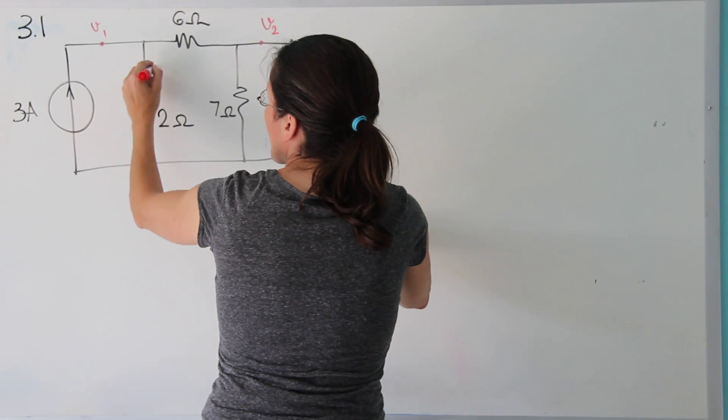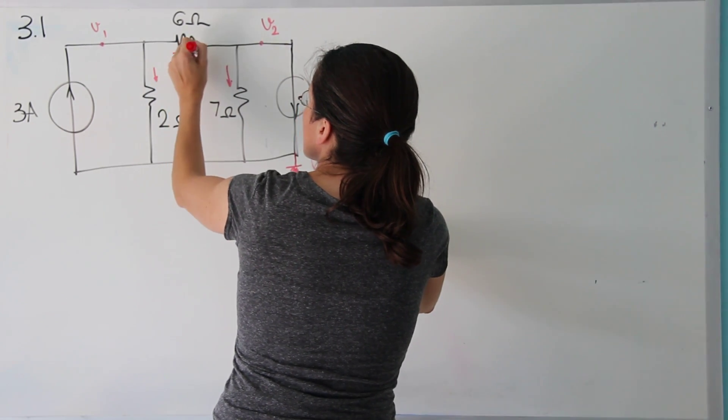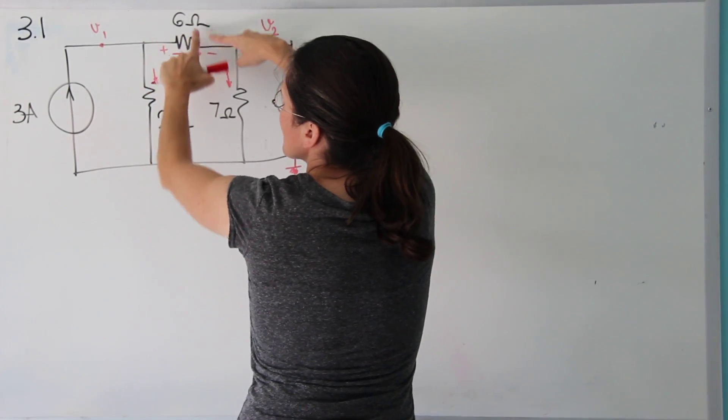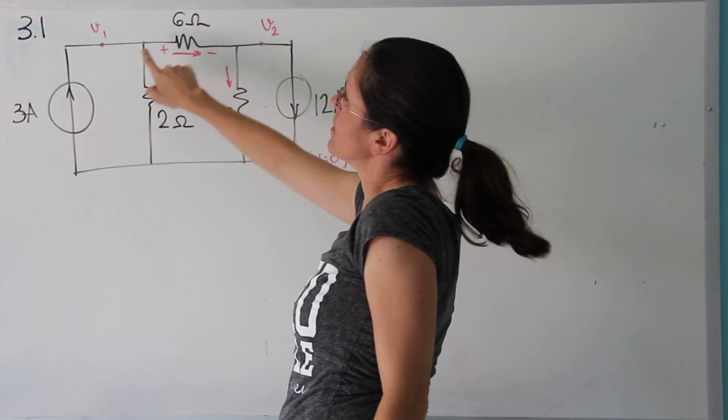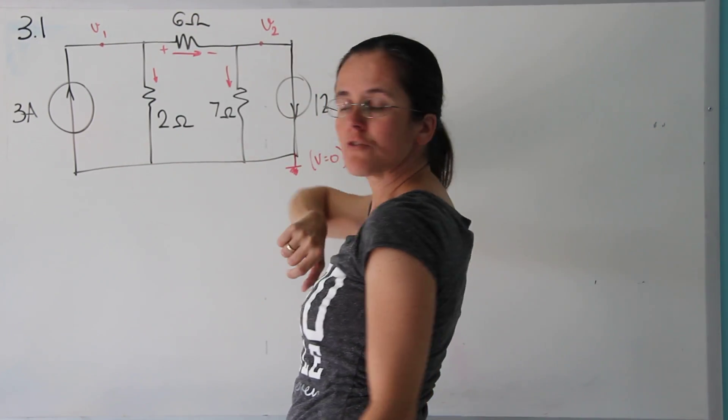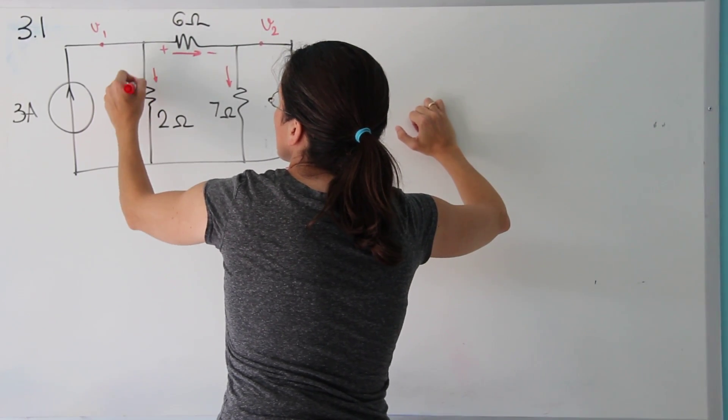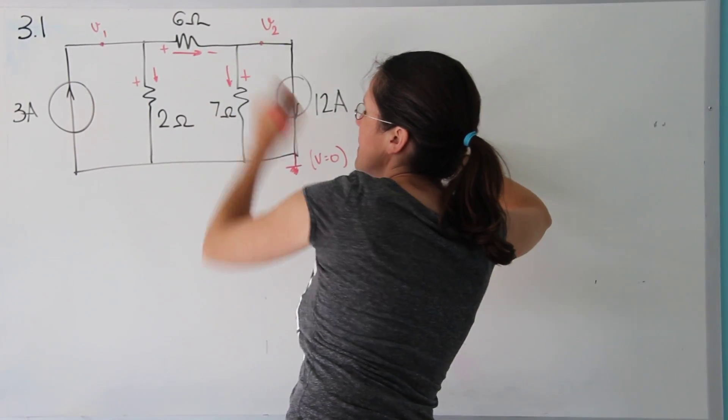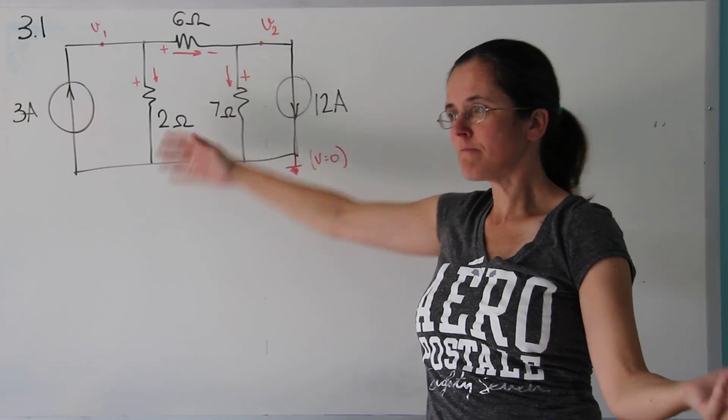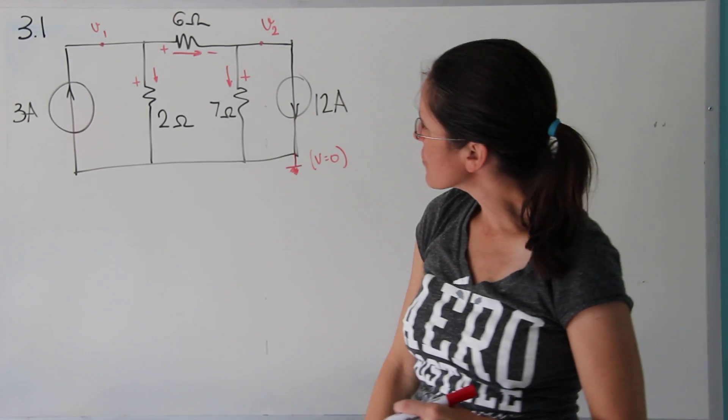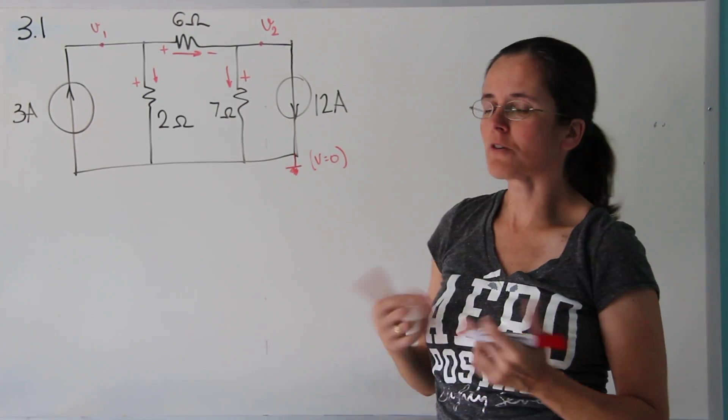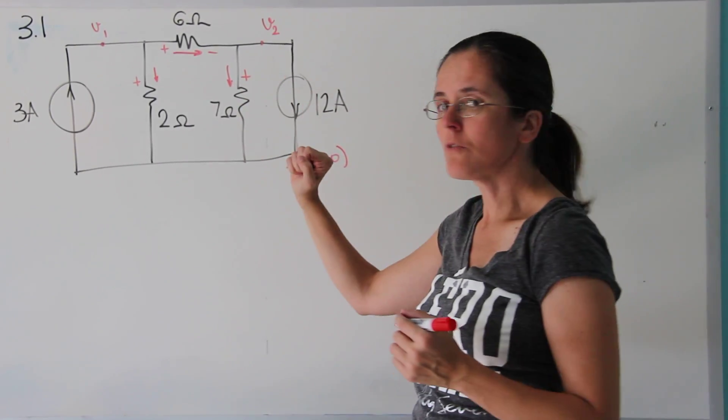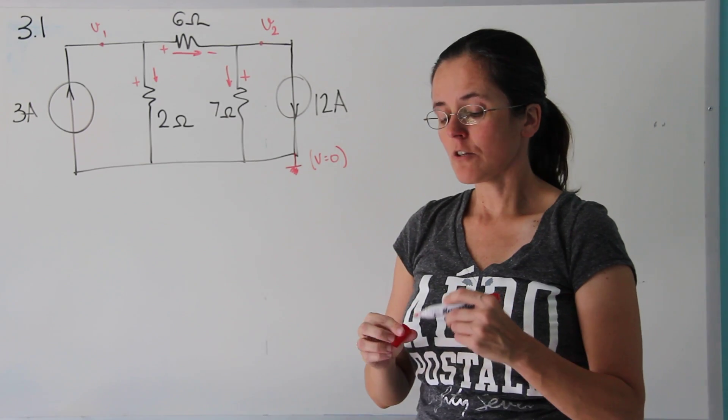So I'm going to pick current directions here, so that when I want to know, for example, the voltage across the 6 ohm resistor, I'm going to write V1 minus V2. And across the 2 ohm resistor, I'm going to write V1 minus 0, which is V1. And across the 7 ohm resistors, V2 minus 0 equals V2. So let's solve it. Basically, we're applying node analysis, because the interest here is to find V1 and V2. So I'm going to do just two equations, Kirchhoff's current law.